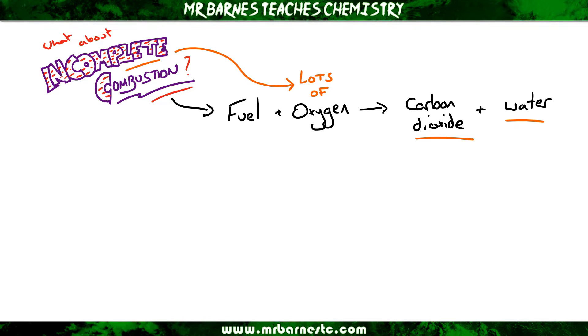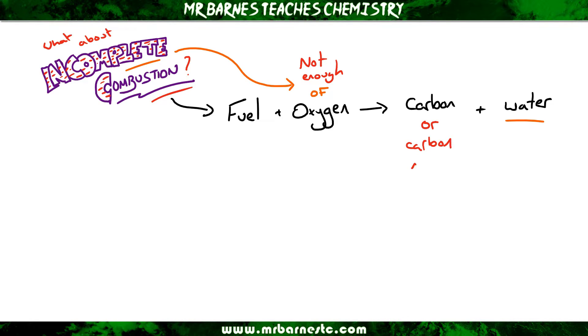Starting with the main difference: it's not lots of oxygen — it's where we've actually got not enough. What happens instead of forming carbon dioxide and water is we form carbon, carbon monoxide, and water. You can also get some carbon dioxide, but the main things produced are either carbon and carbon monoxide, plus water.